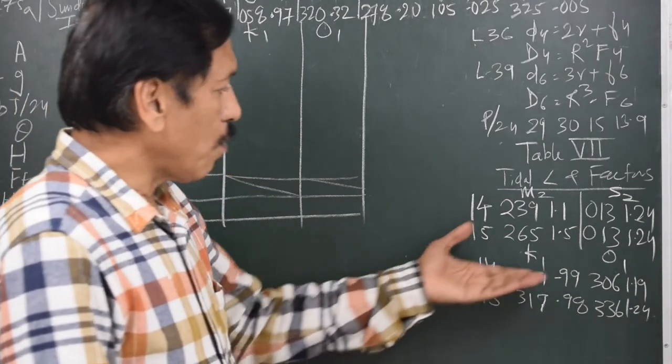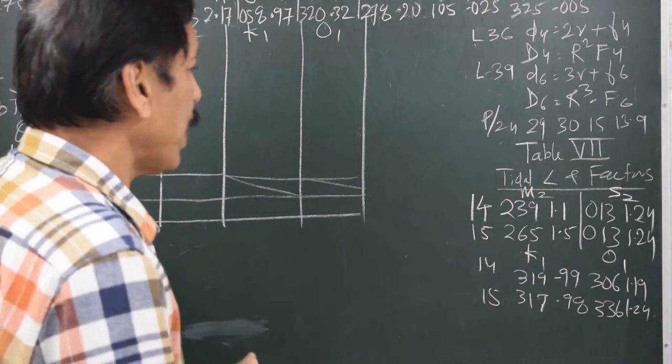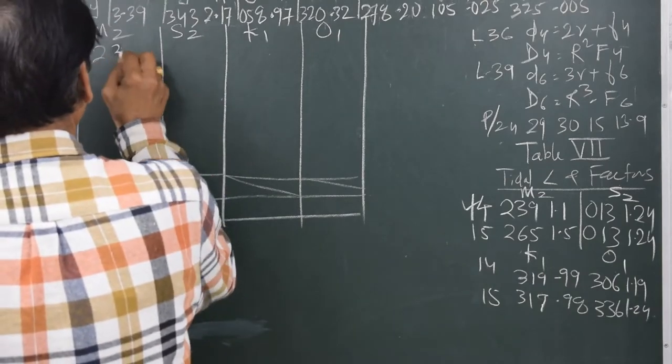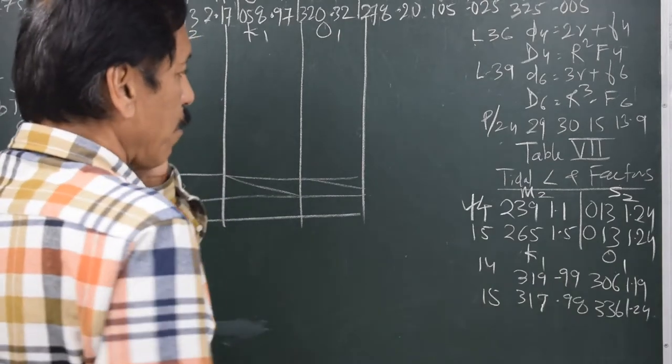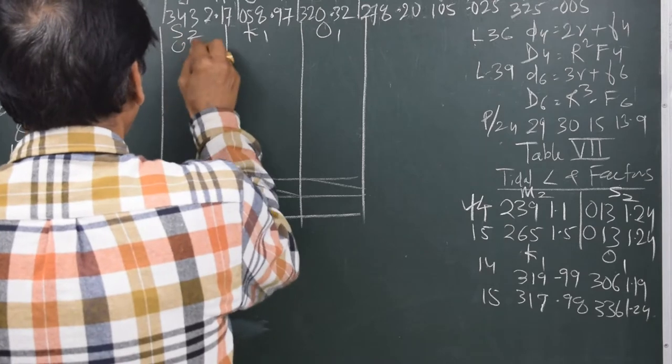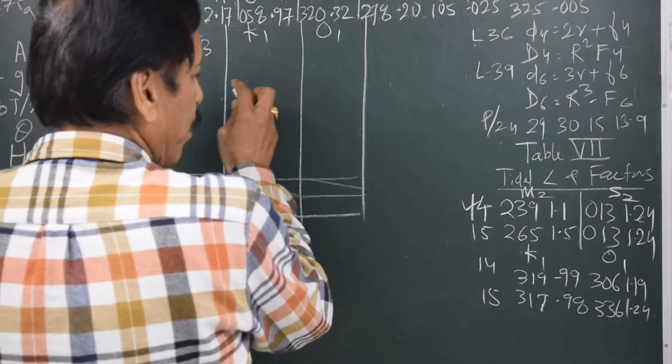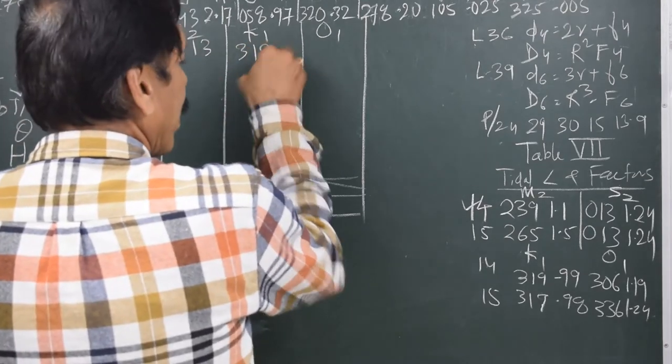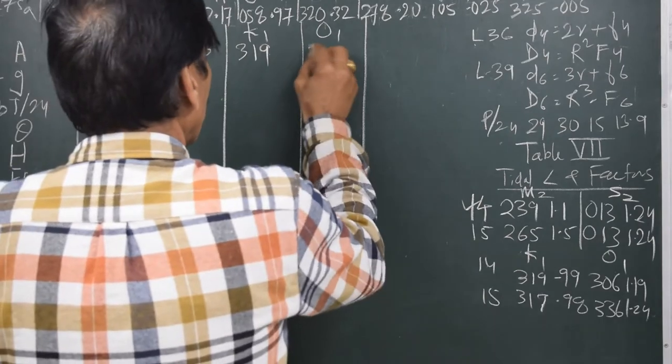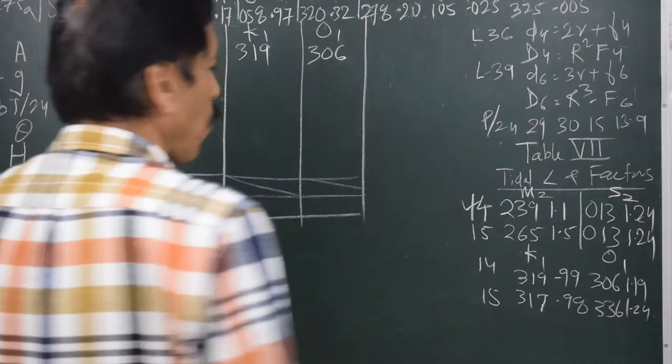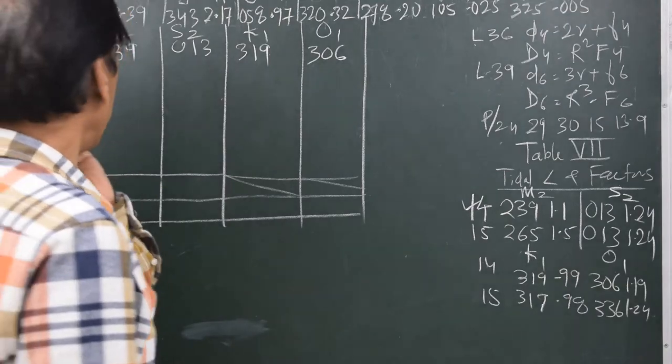We will pick up the values of A from table 7. So I write 239 for M2, and then for S2 it is 013. For K1 it is 319 and for O1 it is 306. Now these values of tidal angles are written for the date 14th.